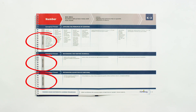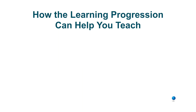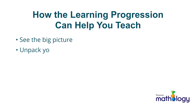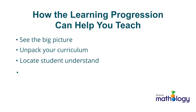Indicators are math concepts ordered in a way that students usually meet them in the curriculum. By linking the content and language of curriculum with research into how children learn math, the learning progression helps you to see math learning holistically. You can then drill down to your curriculum and then to your students' math needs.